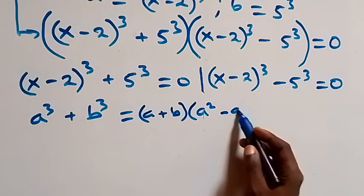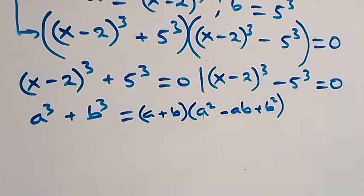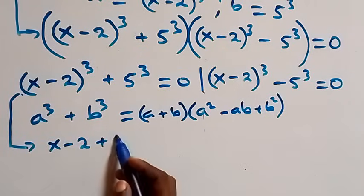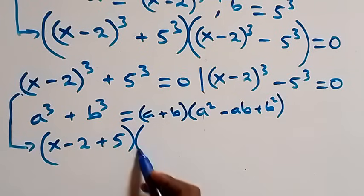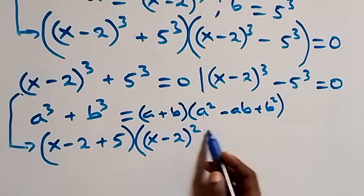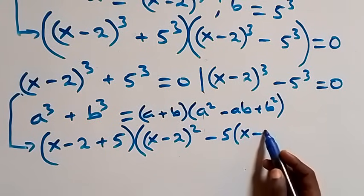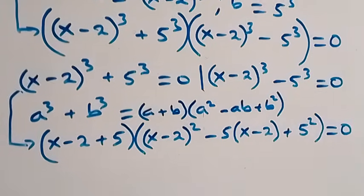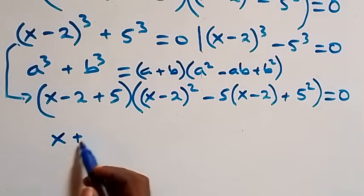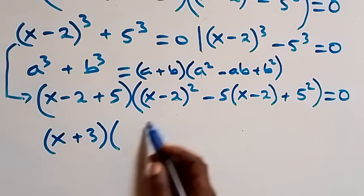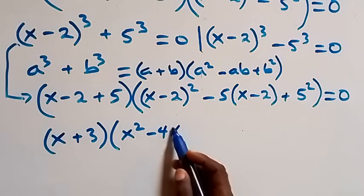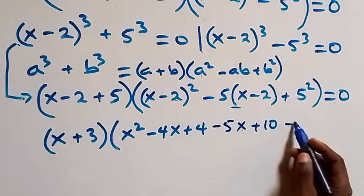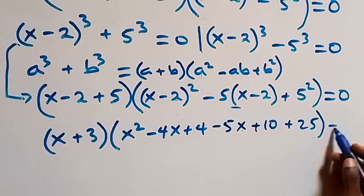Applying the sum of cubes, we get x minus 2 plus 5, in the form a plus b, times x minus 2 squared, minus 5 times x minus 2, plus 5 squared, equals to 0. Expanding: this becomes x plus 3, times x squared minus 4x plus 4, minus 5x plus 10, plus 25, equals to 0.